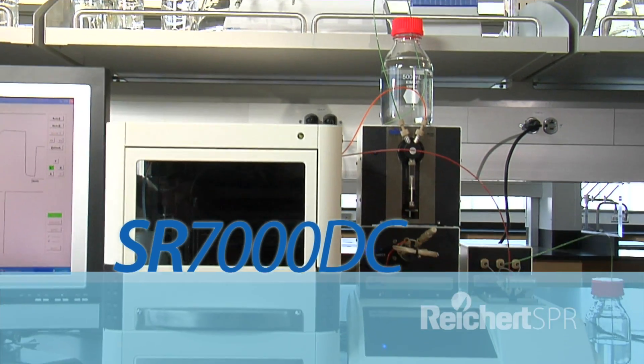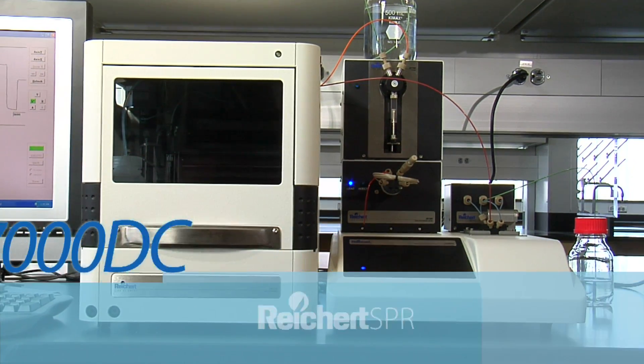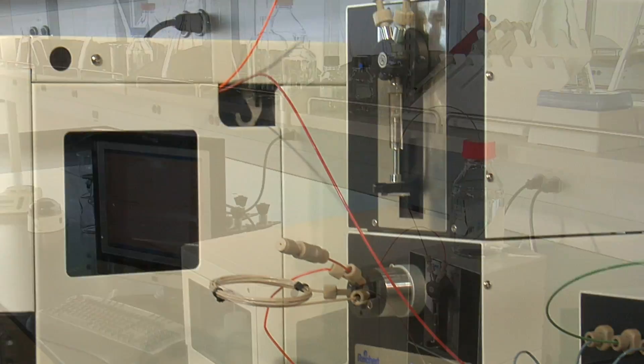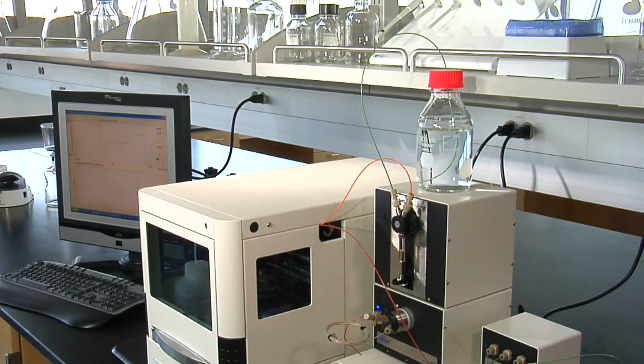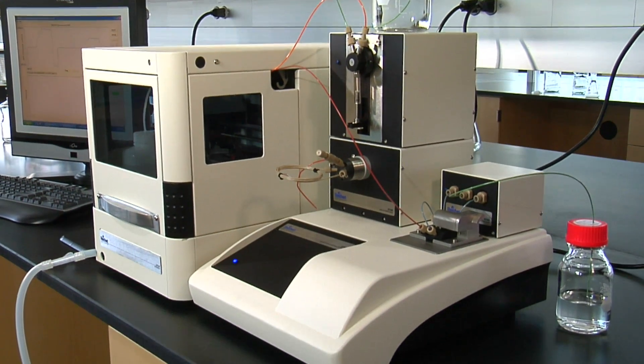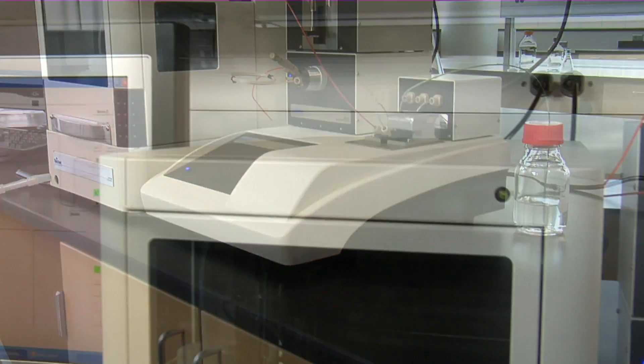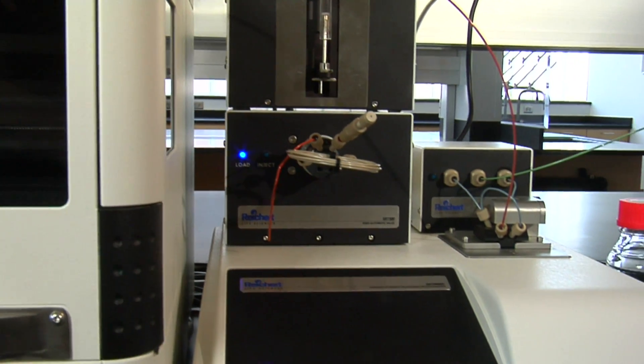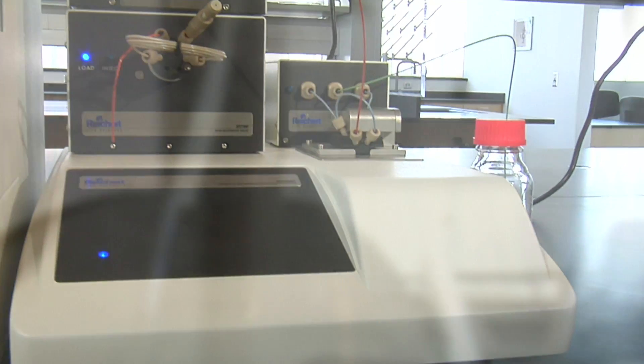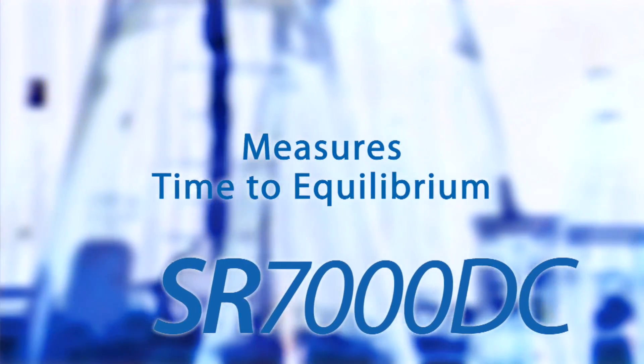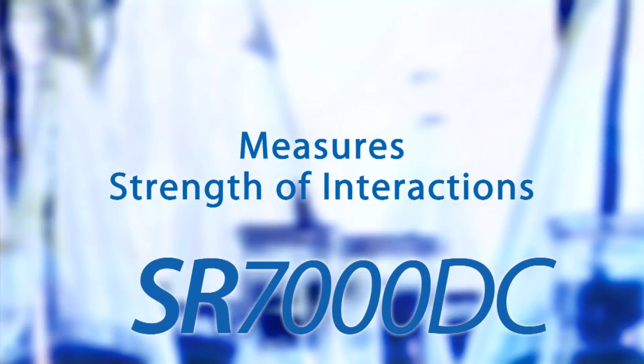The Reichert SR-7000 DC. This world-class instrument provides the tools to determine real-time kinetics and binding affinities of biomolecular interactions. This includes interactions between proteins, DNA, RNA, lipids, drug candidates, and other small molecules. It also measures the speed of interaction, the time to equilibrium, and the strength of interactions.